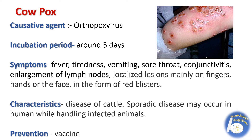The next pox disease is cow pox. Its causative agent is Orthopox virus. Incubation period is around five days. Symptoms of the disease are fever, tiredness, vomiting, sore throat, conjunctivitis (swelling of the eye), enlargement of lymph nodes, and localized lesions mainly on fingers, hands, or the face in the form of red blisters.